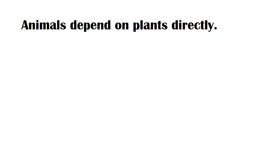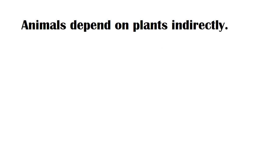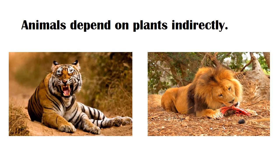Animals that depend on plants directly — here are some examples for you. Animals also depend on plants indirectly; tigers and lions take fish and flesh as food, so they depend on plants indirectly.